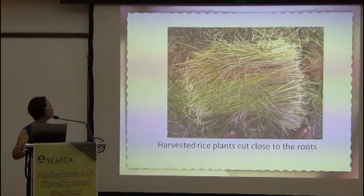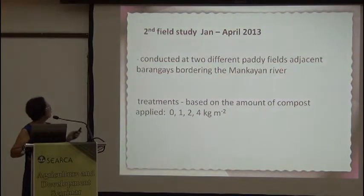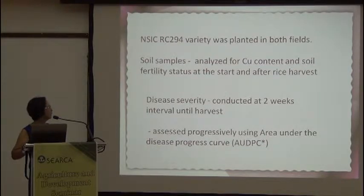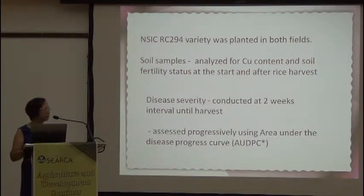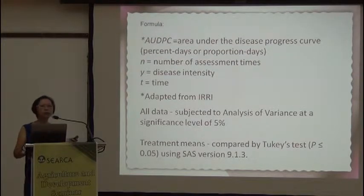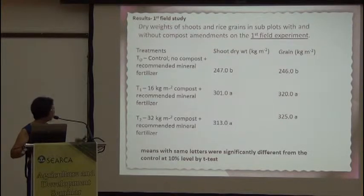Rice was harvested by cutting close to the roots. The second study was conducted from January to April 2013, with compost application rates of zero, one, two, and four kilograms per square meter, using a different rice variety. Soil samples were analyzed for copper content and soil fertility status before and after rice harvest. Disease severity monitoring was conducted at two-week intervals until harvest, and measured progressively under AUDPC methodology adapted from IRRI. Data were subjected to statistical analysis.